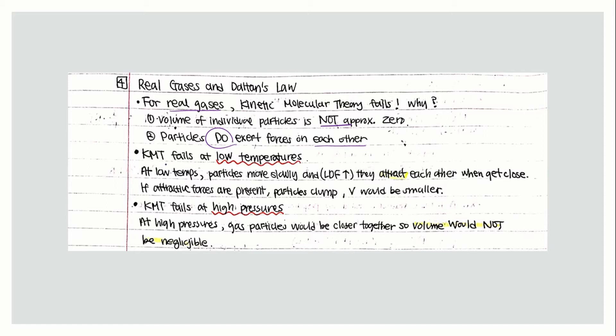Kinetic molecular theory fails at low temperatures because at low temperatures particles move slowly and there will be more LDF as they attract each other when they get close. If attractive forces are present, the particles will clump and volume will be smaller.